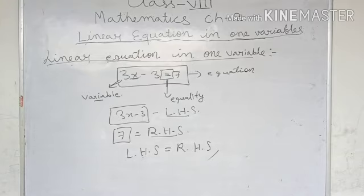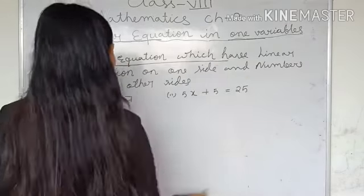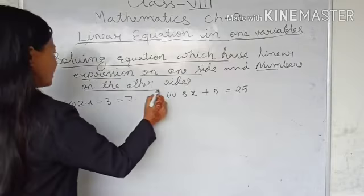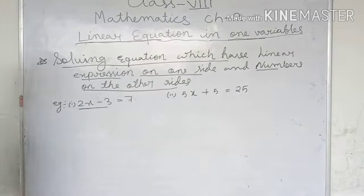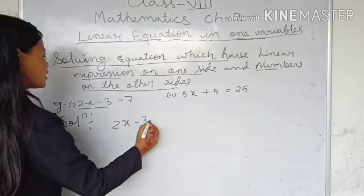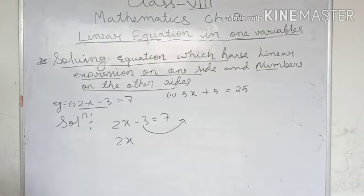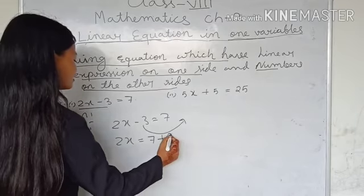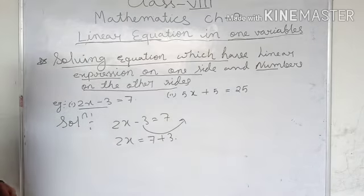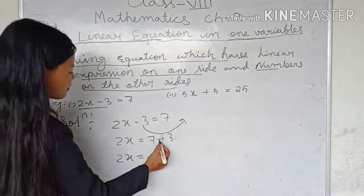Now I will solve one example — how to solve a linear equation in one variable. We are solving equations which have a linear expression on one side and a number on the other side. The question is 2x minus 3 is equal to 7. I will transfer this 3 to the right hand side, so this will become 7 plus 3. If you transfer from left hand side to right hand side, the negative becomes positive. So 2x is equal to 10.